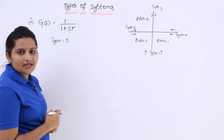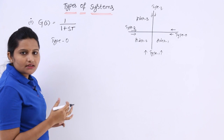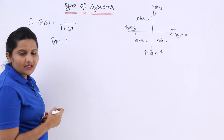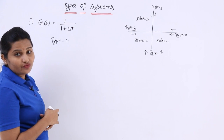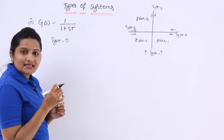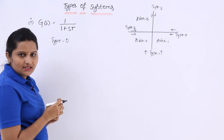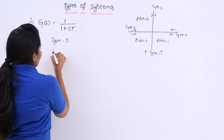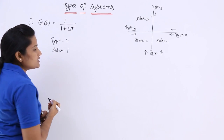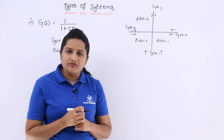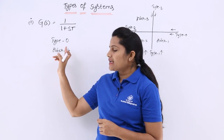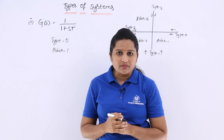Coming to the order of the system: the maximum power of s is treated as the order of the system. If you observe here, the maximum power of s is 1. So it comes under a first order system. Therefore, the given transfer function is type 0 and order 1 system.